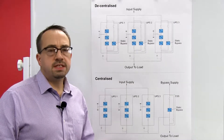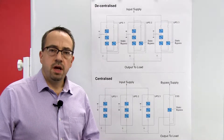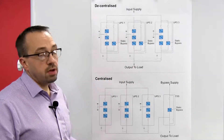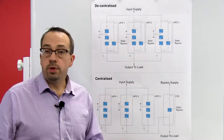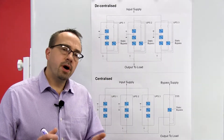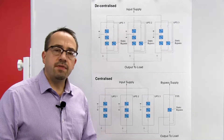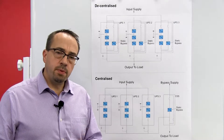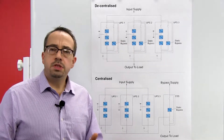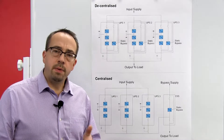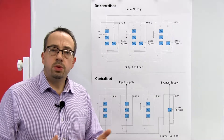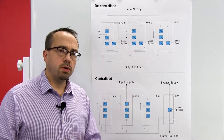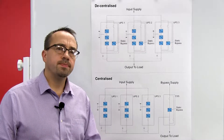The terms decentralized and centralized effectively refer to the location of the static bypass within the overall UPS system. The primary reason to have a static bypass within the UPS system is to provide the UPS with an automated route of power around itself should an issue arise, and hence the UPS can no longer adequately support the critical load.